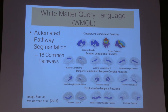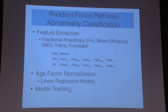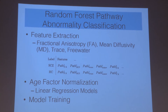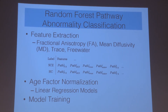We then used the white matter query language algorithm to segment the whole-brain tractography into 16 different pathways from the 60 subjects. Processing was performed on each pathway with the goal of quantifying the inherent abnormalities present, using random forests. The first step in this machine learning process is feature extraction, where we extract four diffusion-measured features — fractional anisotropy, mean diffusivity, trace, and free water — for each of the 16 pathways, resulting in a 64-dimensional feature vector for each subject.